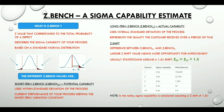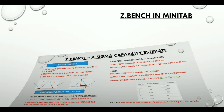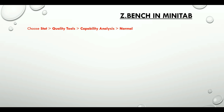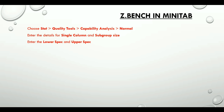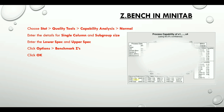Now let's have a quick look at where to locate this in Minitab. We choose Stat, Quality Tools, Capability Analysis, and Normal. Enter the details for single column and subgroup size. Enter the lower specification and upper specification limits. We click on Options and Benchmark Zs, then click OK in the subsequent dialog boxes. And here is the final graphical output.